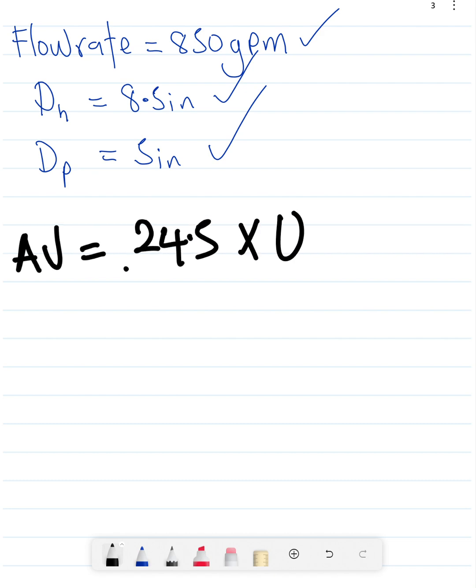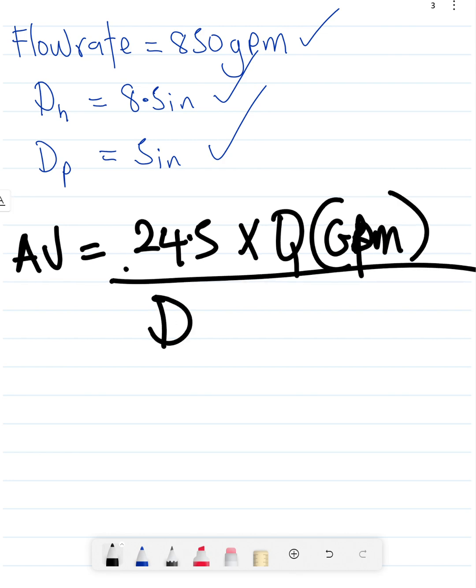24.5 times Q, but note that your Q is going to be in gallons per minute, divided by diameter of the hole squared minus the diameter of the pipe squared. When you plug in your numbers...